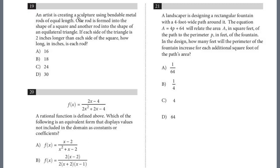An artist is creating a sculpture using bendable metal rods of equal length. One rod is formed into the shape of a square, and another rod into the shape of an equilateral triangle. If each side of the triangle is two inches longer than each side of the square, how long in inches is each rod?